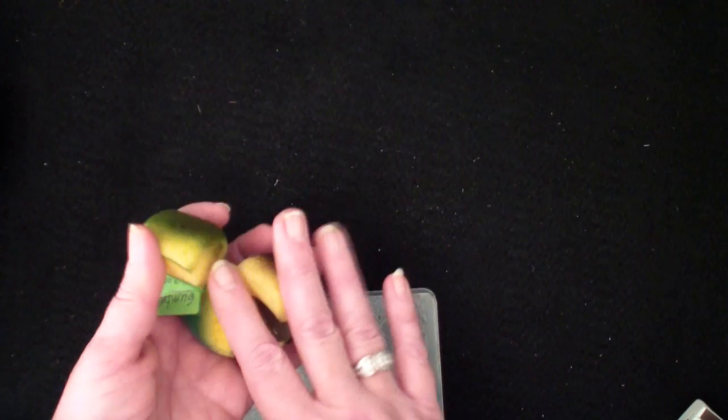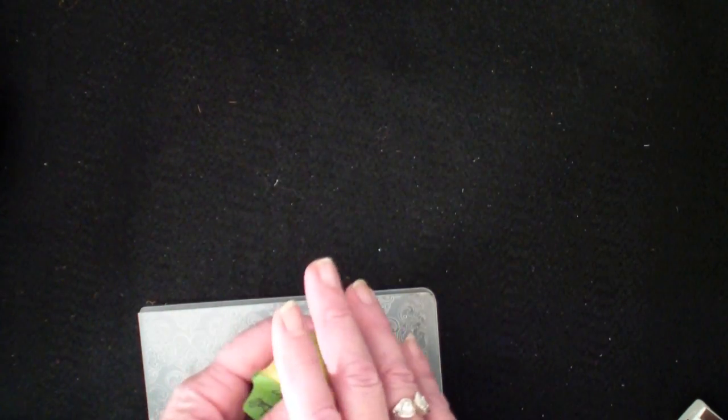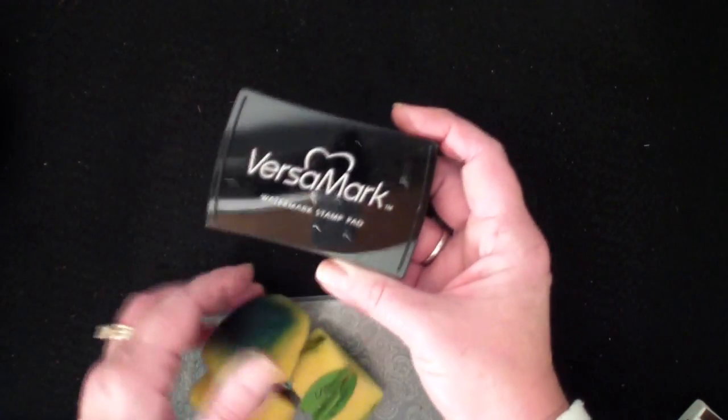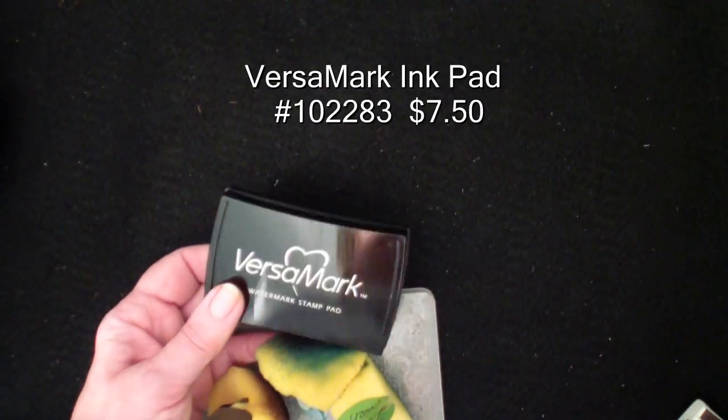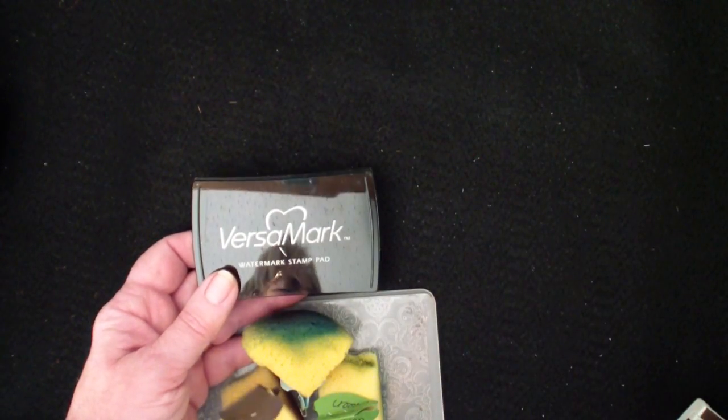Then what you need also is three sponges that we're going to be using with those shades of color. We're going to be using the Versamark pad, a heat tool and a brayer, and also some gold powder. So let's get started.